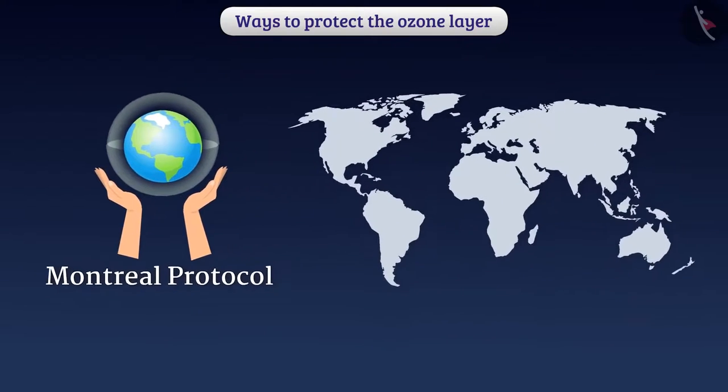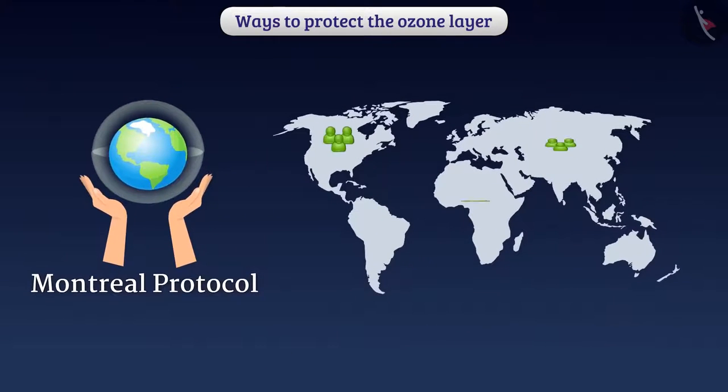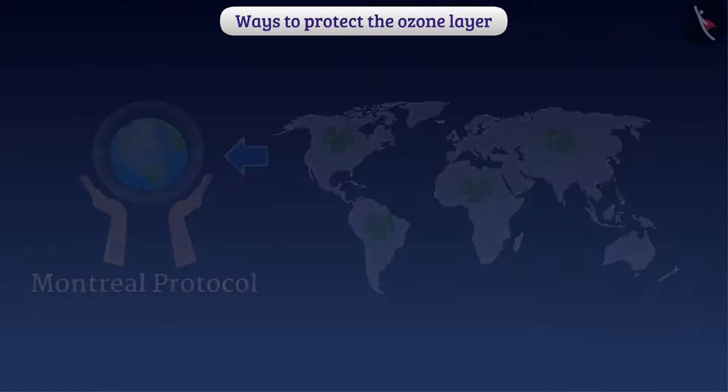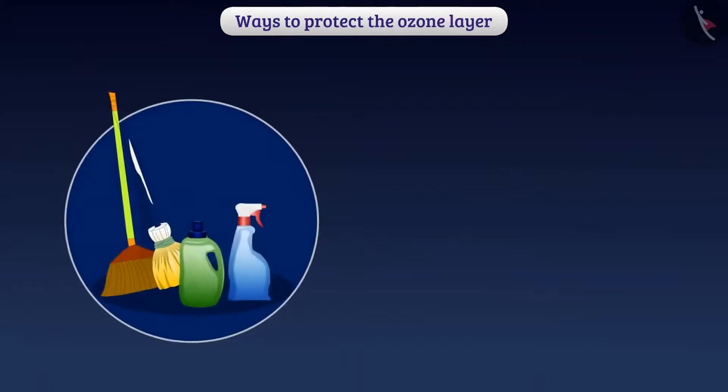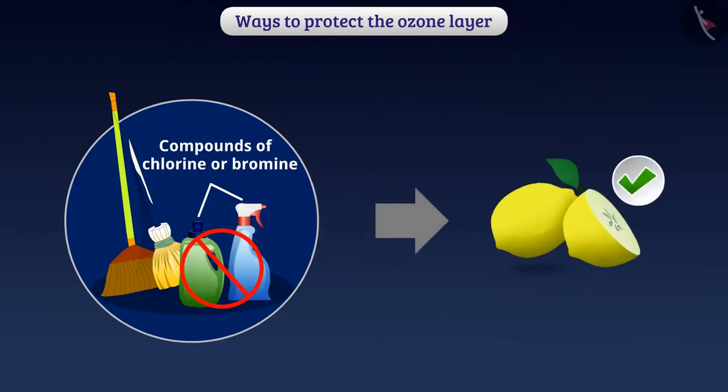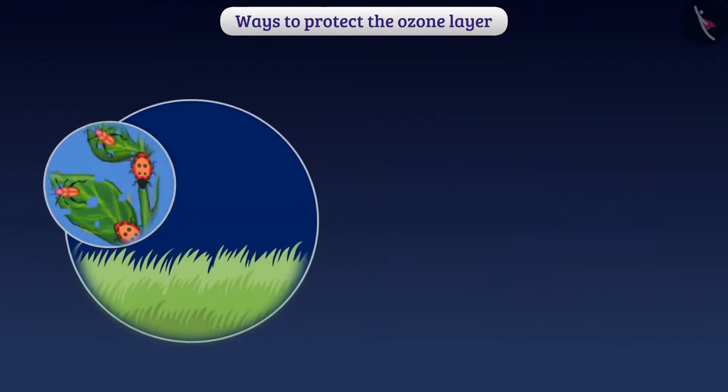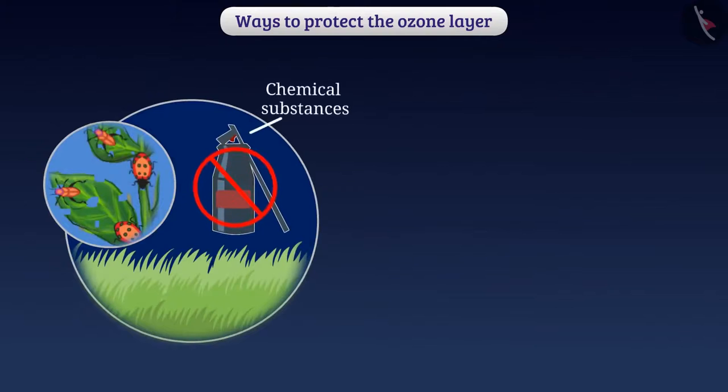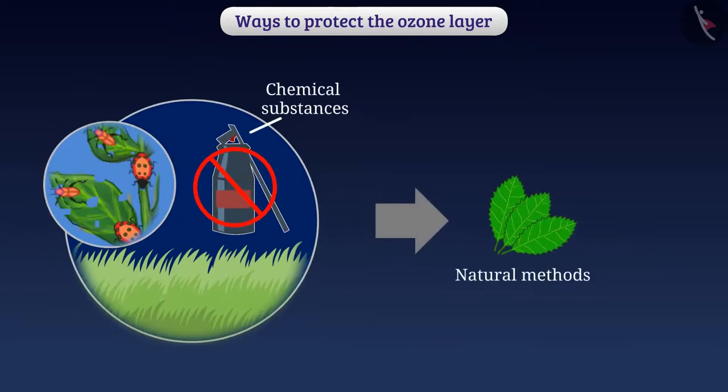After this, various countries are working together to save the ozone layer. We can also play a role in this work. Many substances used for cleaning purposes are compounds of chlorine or bromine. We can reduce their use. Instead of using such substances, we can use other natural substances like lemon. For the control of pests and grasses instead of chemical substances, natural methods can be used.